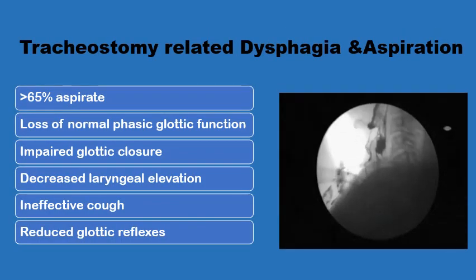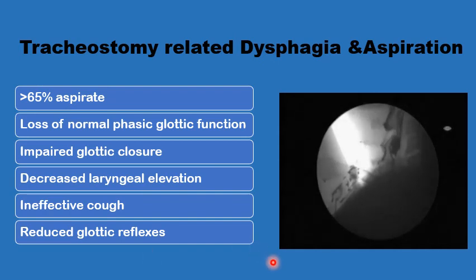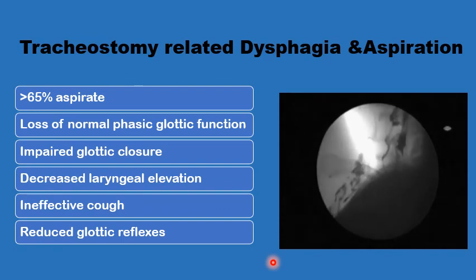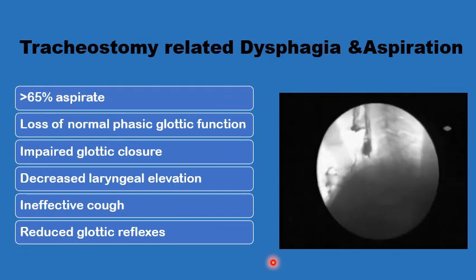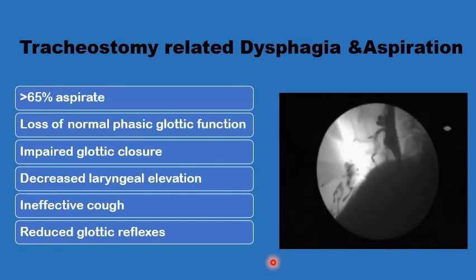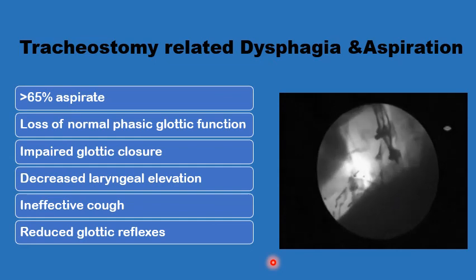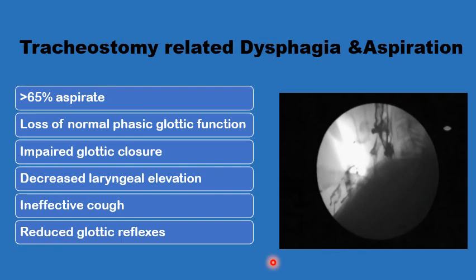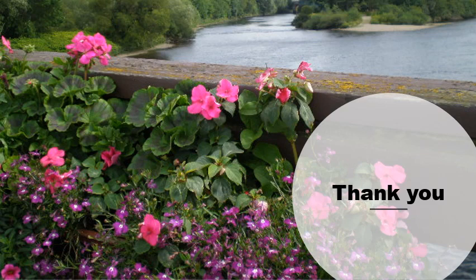Up to two-thirds of patients with a tracheostomy tube can have pharyngeal dysphagia and/or aspiration, either because of the primary cause for the tracheostomy itself, or through the effect of the tracheostomy on fixing the larynx and lower neck — preventing its elevation and anterior displacement during cricopharyngeus opening — along with ineffective cough, loss of glottic phasic functions, reduced laryngeal sensation, or impaired glottic closure. This concludes the presentation on the basics of the dynamics of pharyngeal swallowing, which forms the basis for understanding and interpreting all investigations of pharyngeal dysphagia and aspiration in the next presentations. As-salamu alaykum.